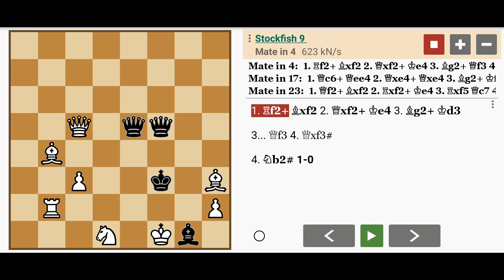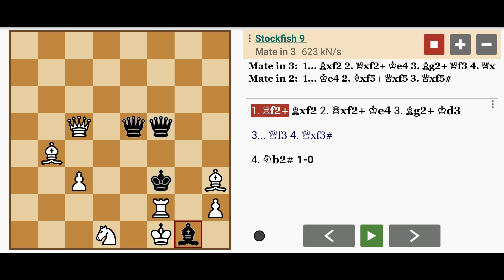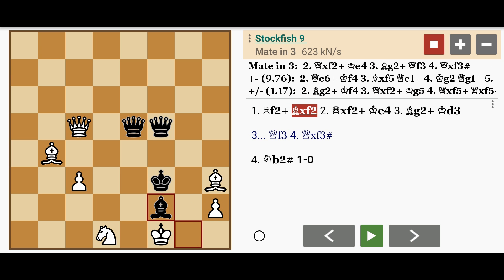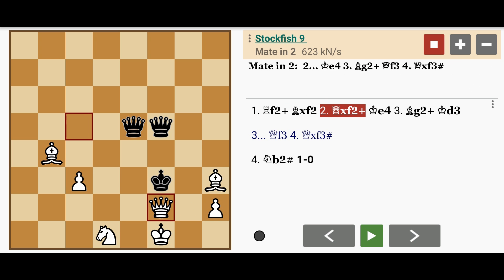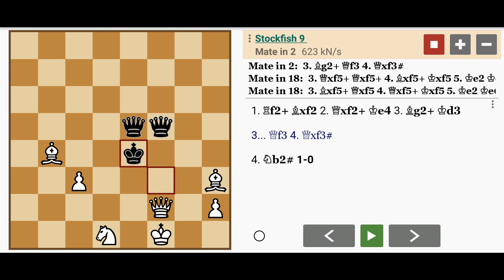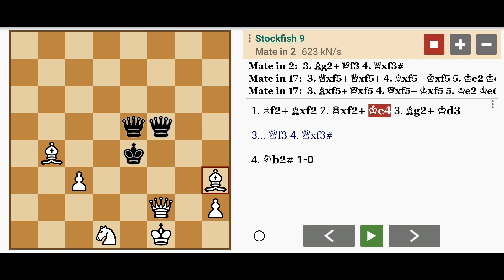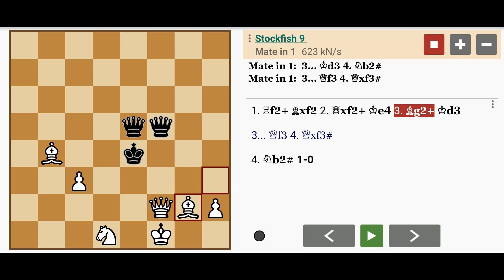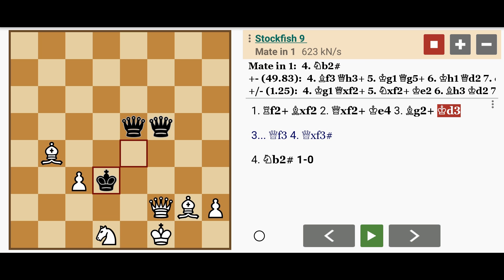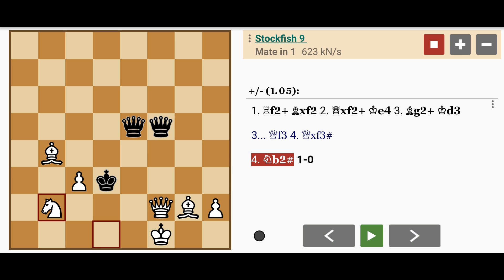Going back to the initial position, the main line runs as rook to f2, check. Bishop captures f2, queen captures f2, check. King to e4, bishop to g2, check. King to d3, and knight to b2, checkmate.